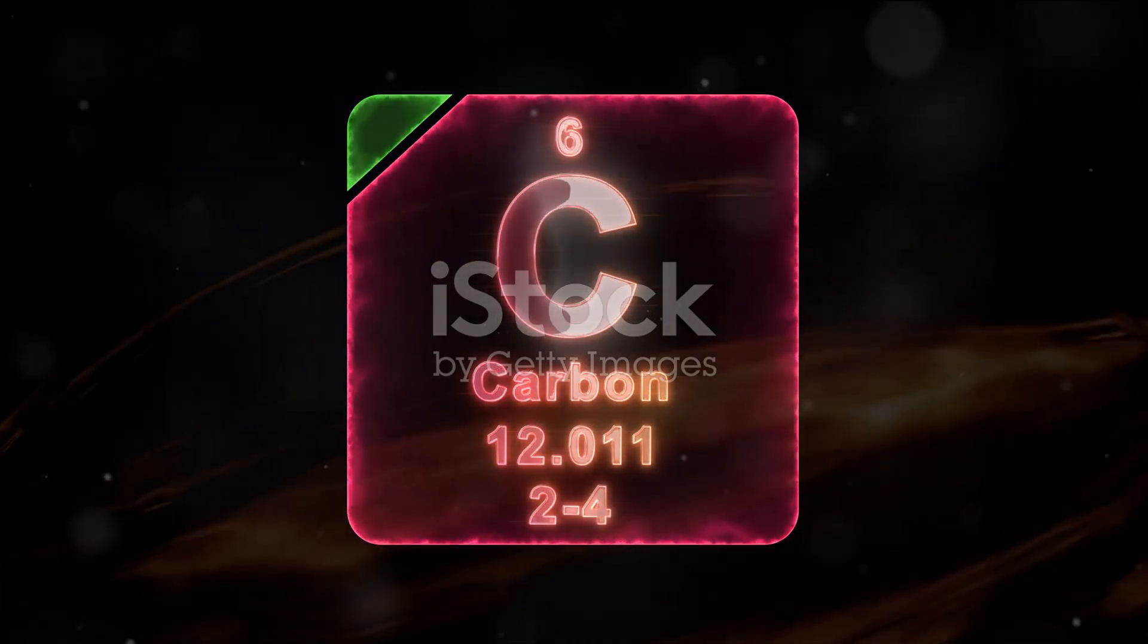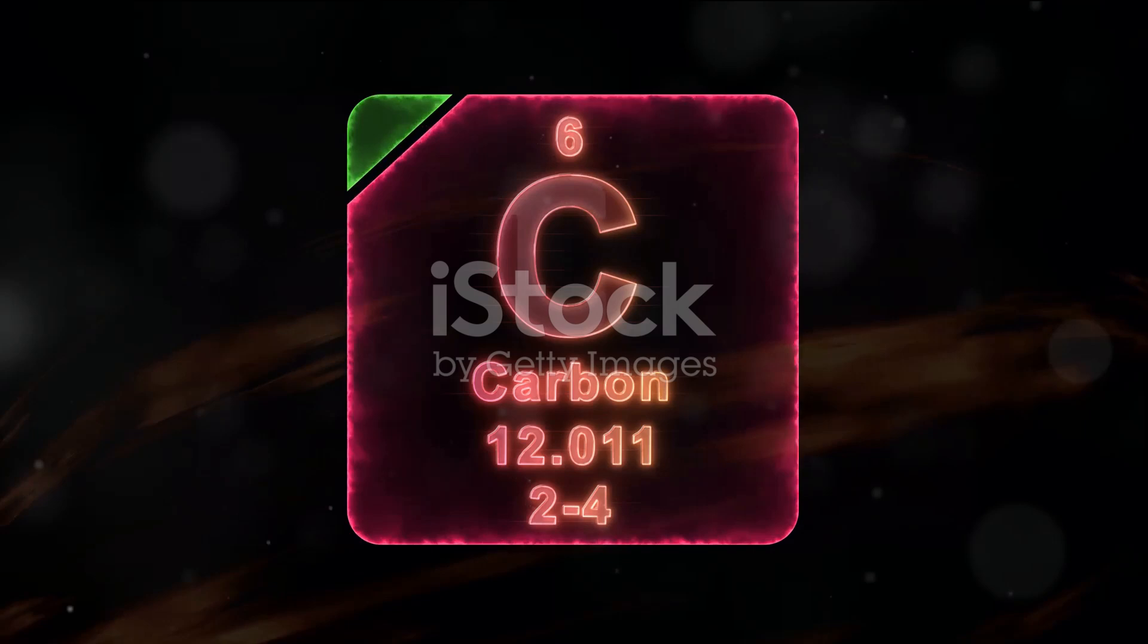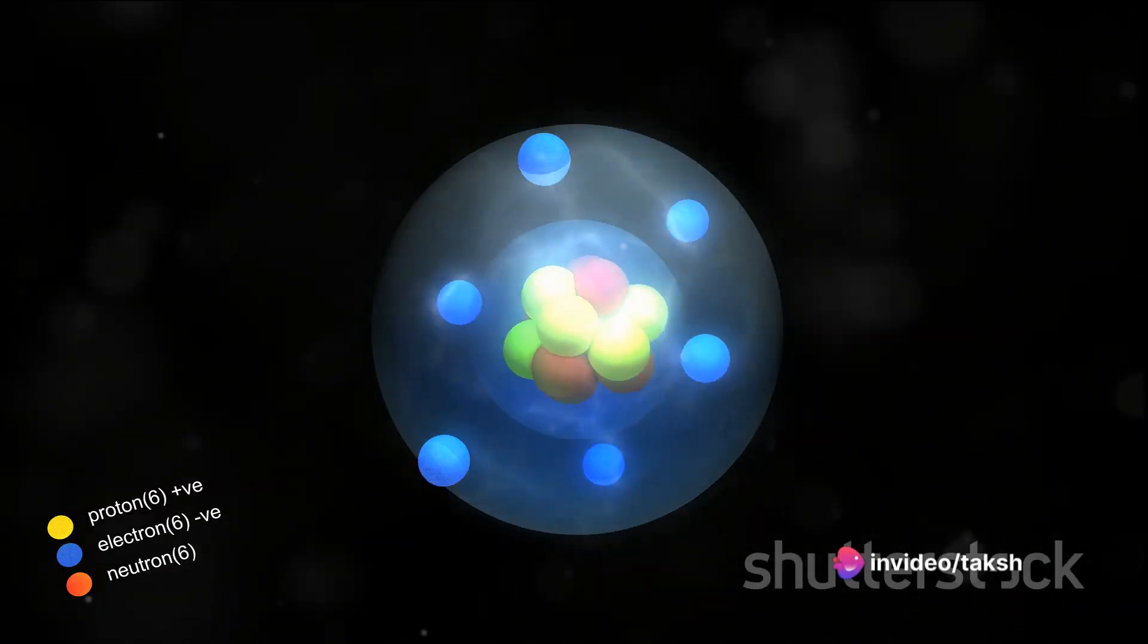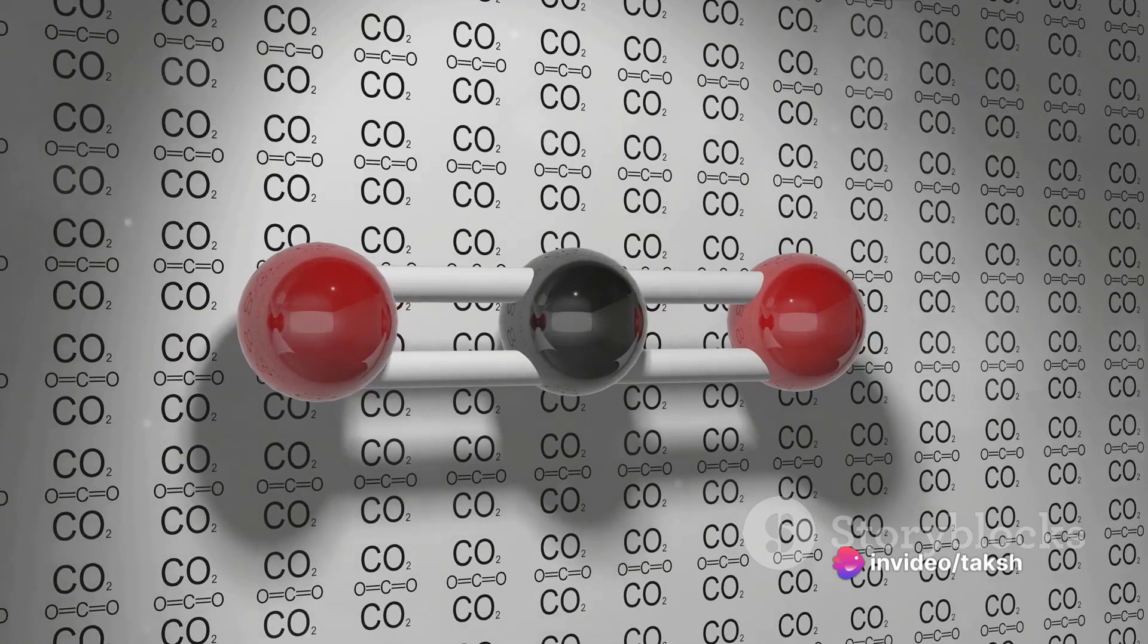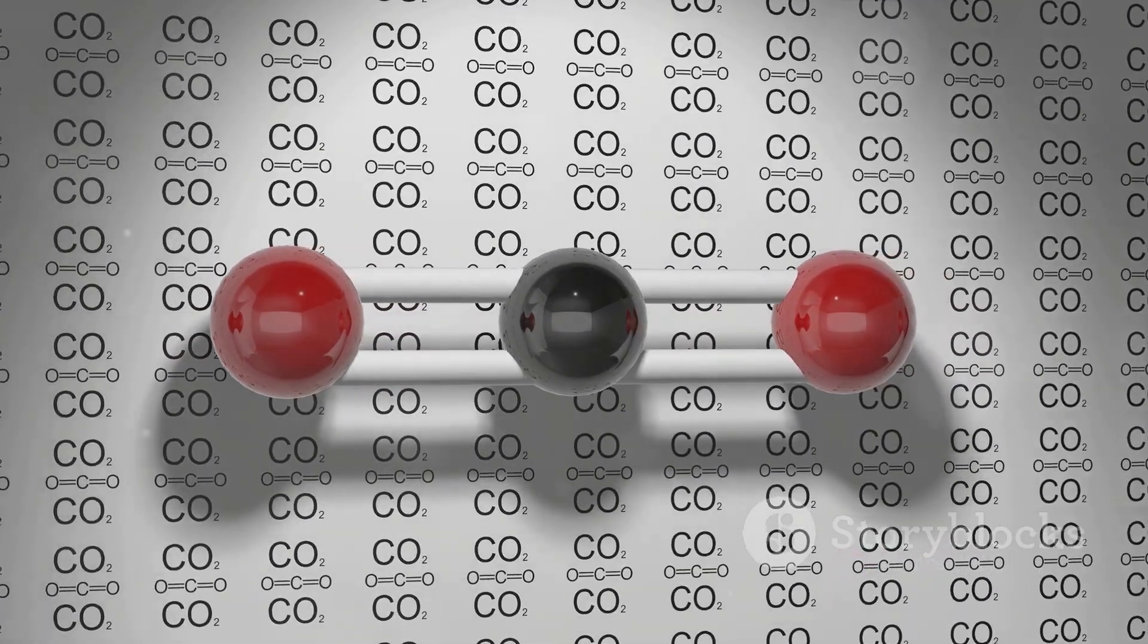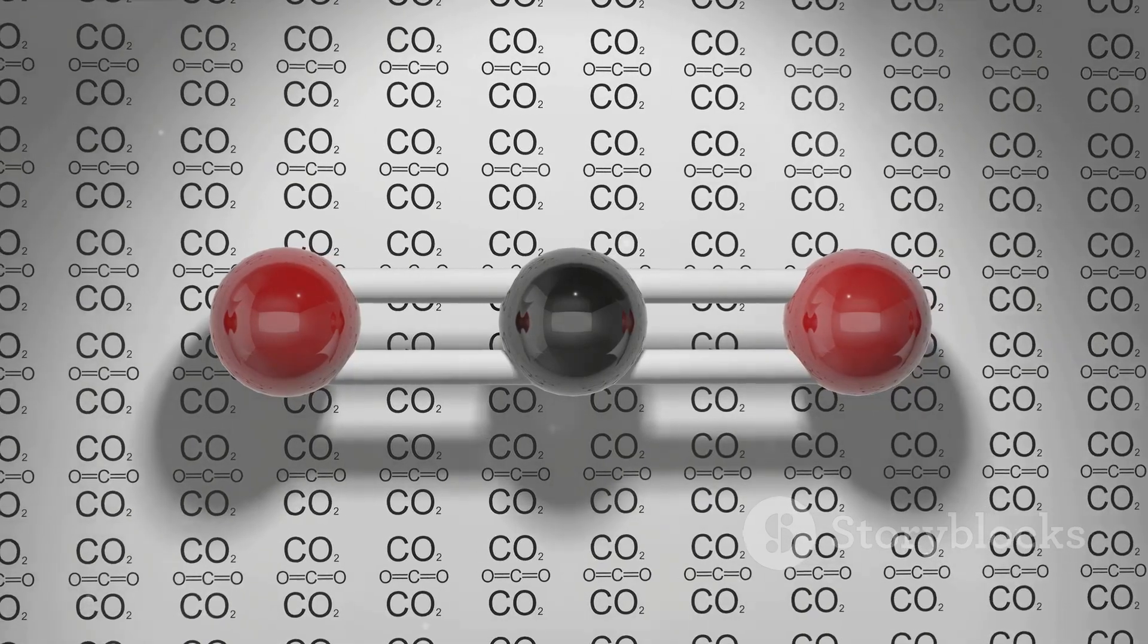Carbon, a non-metallic element, sits comfortably in the 14th group of the periodic table. With an atomic number of 6, carbon has 4 electrons in its outermost shell. This unique configuration allows carbon to form a variety of bonds with other elements, leading to the creation of a vast array of compounds.